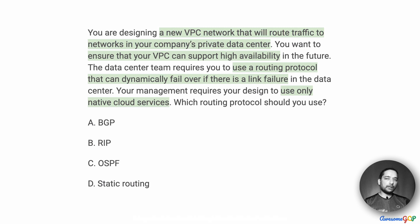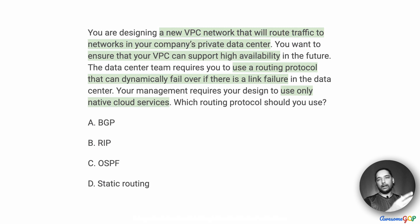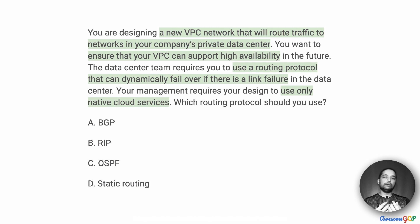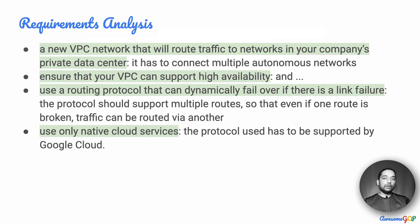There are a few key parts of this question. One, there are going to be two different networks. This is a hybrid setup and you want to ensure that if the path or the route taken by traffic in one direction fails, another one should come up or be available for that data to traverse a different route even if one is blocked. And of course we only want to use native cloud services.